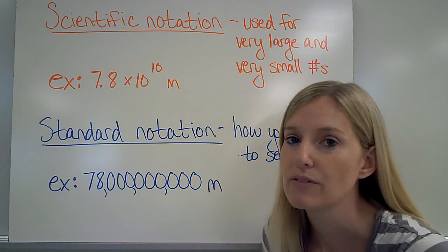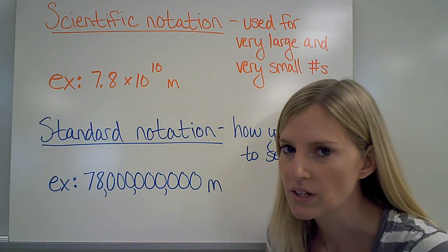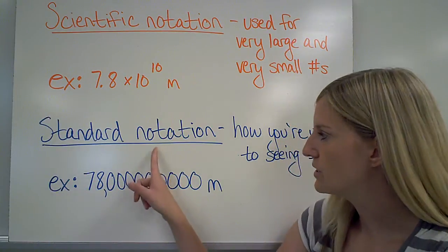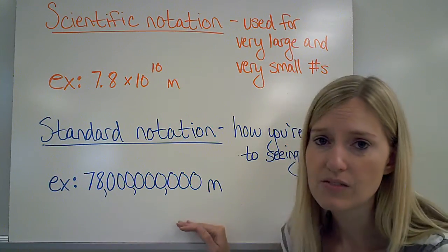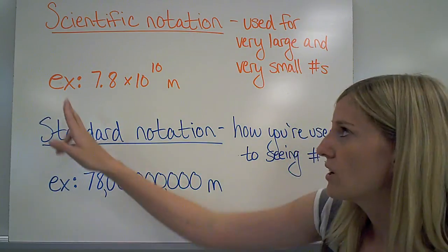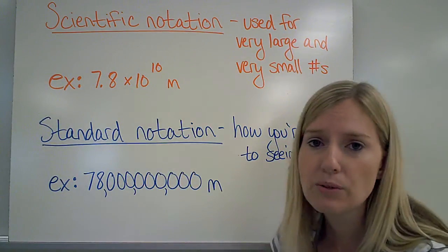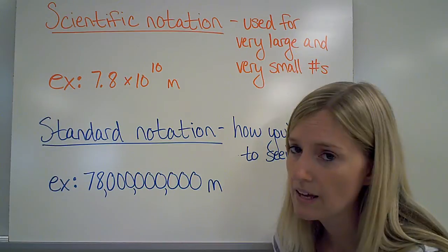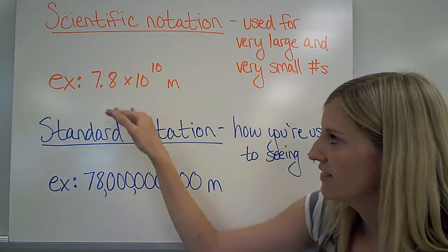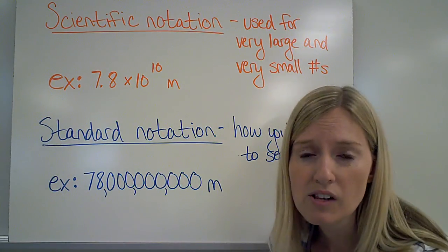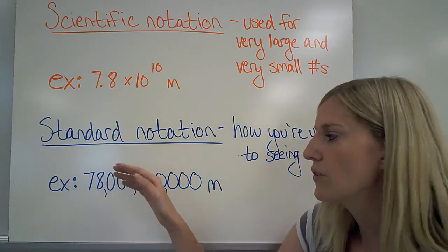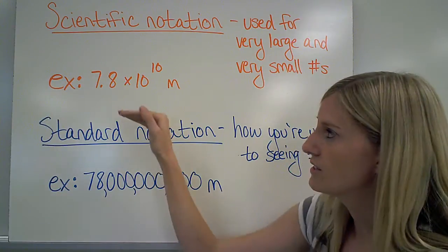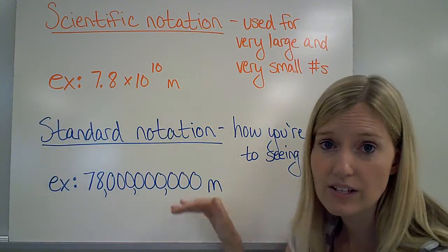In science, we deal with a lot of really big and really small numbers. When we use standard notation, which is how you're used to seeing numbers, that can lead to lots of zeros. So we use what's called scientific notation to reduce the amount of zeros we have to write. This number and this number are actually equal. They're just in two different types of notation. This video is about how to convert standard notation into scientific notation and vice versa.